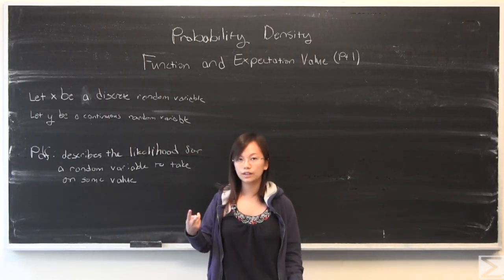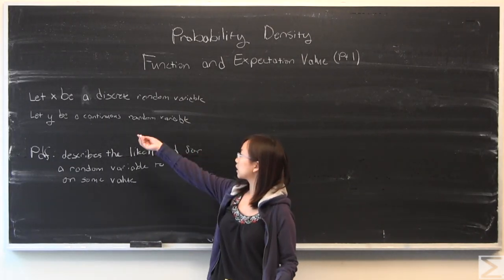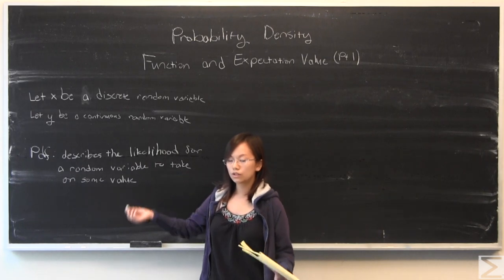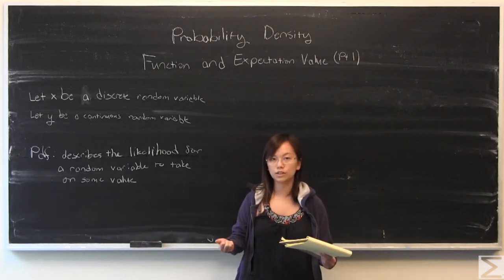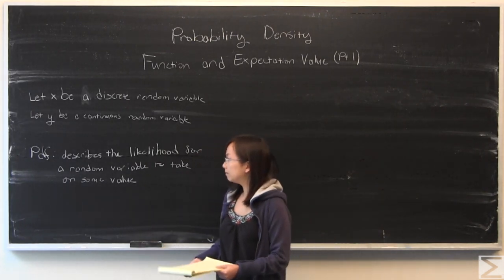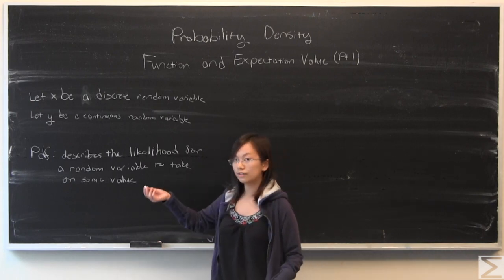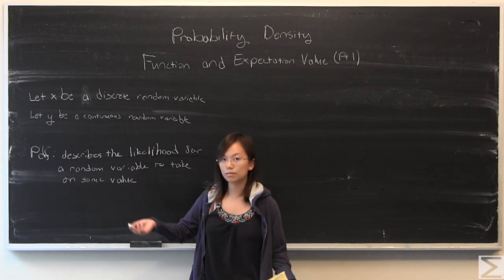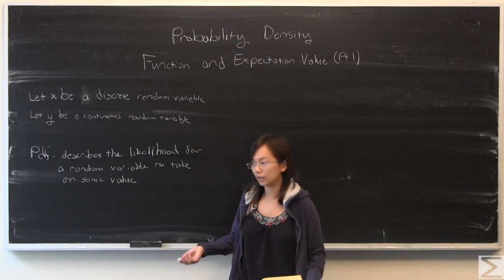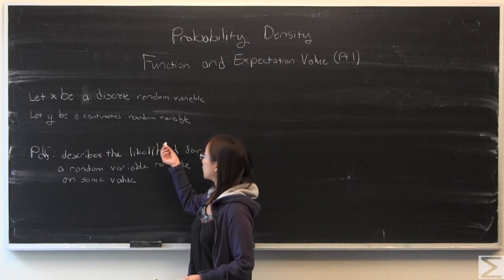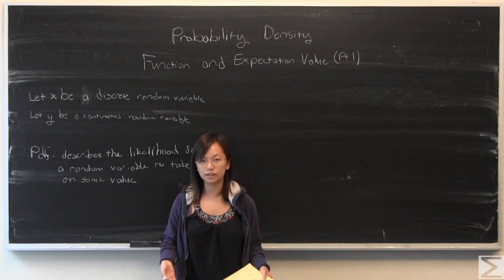Generally, we like to talk about two kinds of random variables. We like to talk about discrete random variables. So if you roll a dice, there are six possibilities: one, two, three, four, five, six. And your probability density function would tell you that on a fair dice, each number has a one-sixth probability.